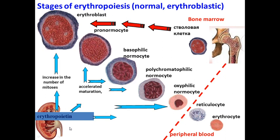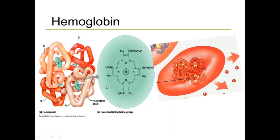Erythropoietin can increase the number of mitoses, accelerate maturation, and accelerate the exit of erythrocytes into the blood. Our red blood cells have a biconcave structure and a size of 7 to 8 micrometers. This biconcave shape gives our erythrocytes the ability to deform and pass through small capillaries.